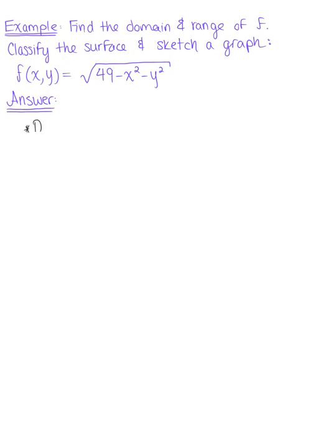So the first thing we want to do is find the domain. Looking at our given function, we see that we have a square root, so we know that the inside of the radicand must be positive. We have 49 minus x² minus y² must be greater than or equal to 0, which we can then rewrite as 49 is greater than or equal to x² plus y².